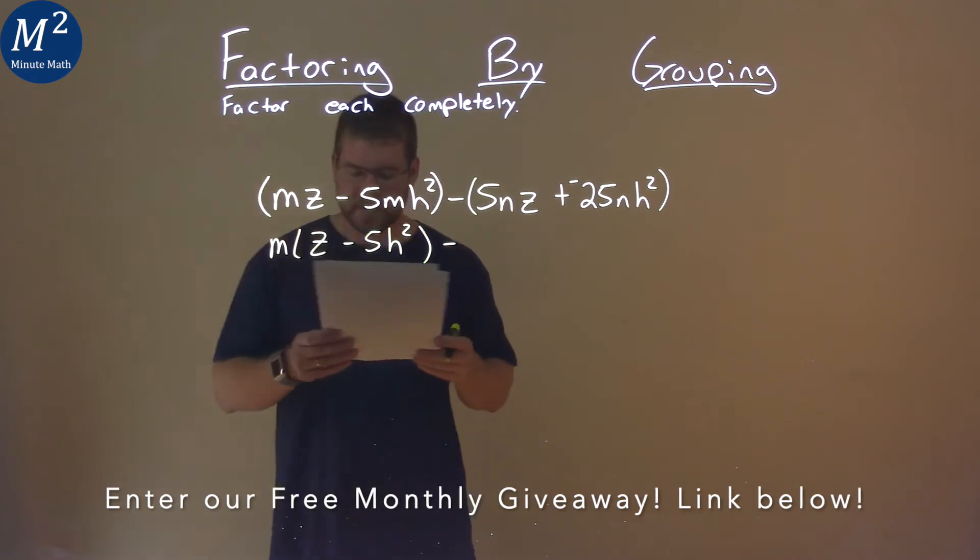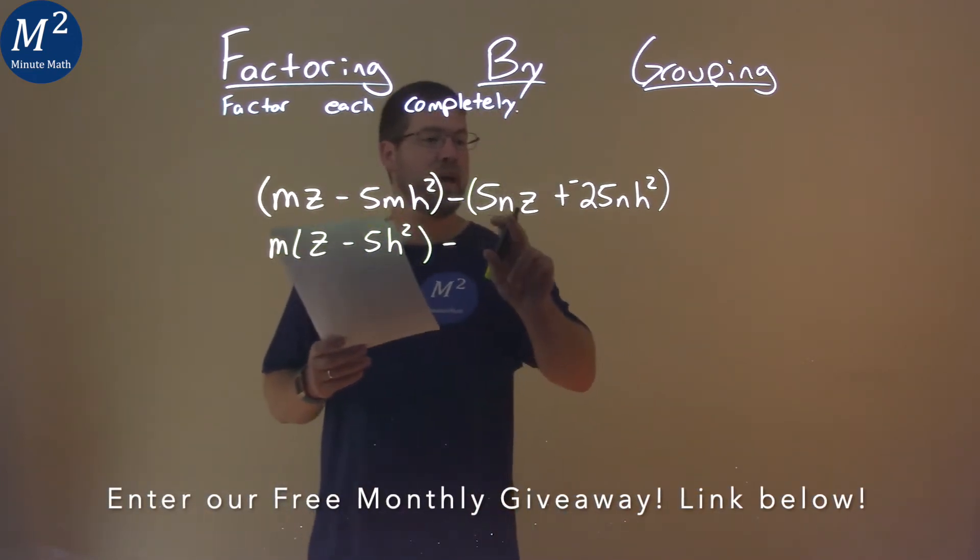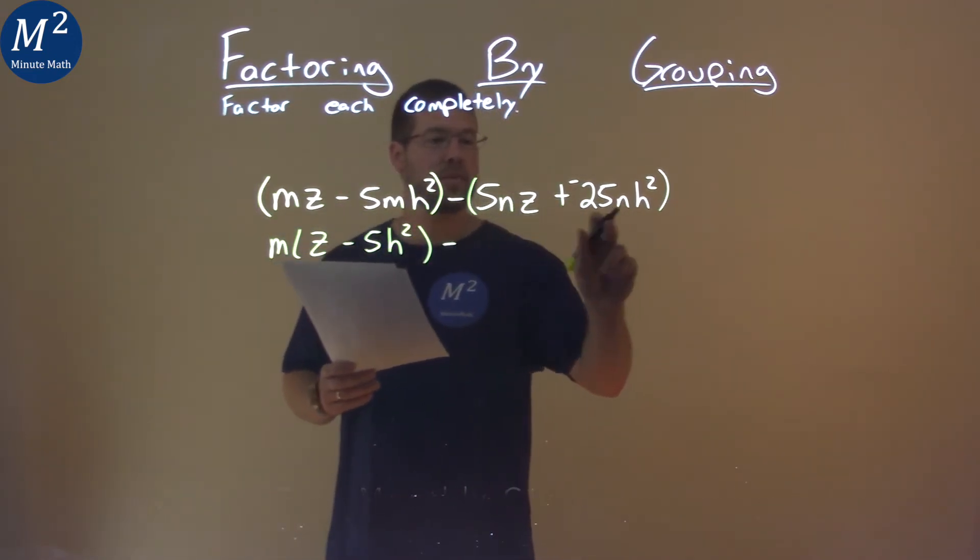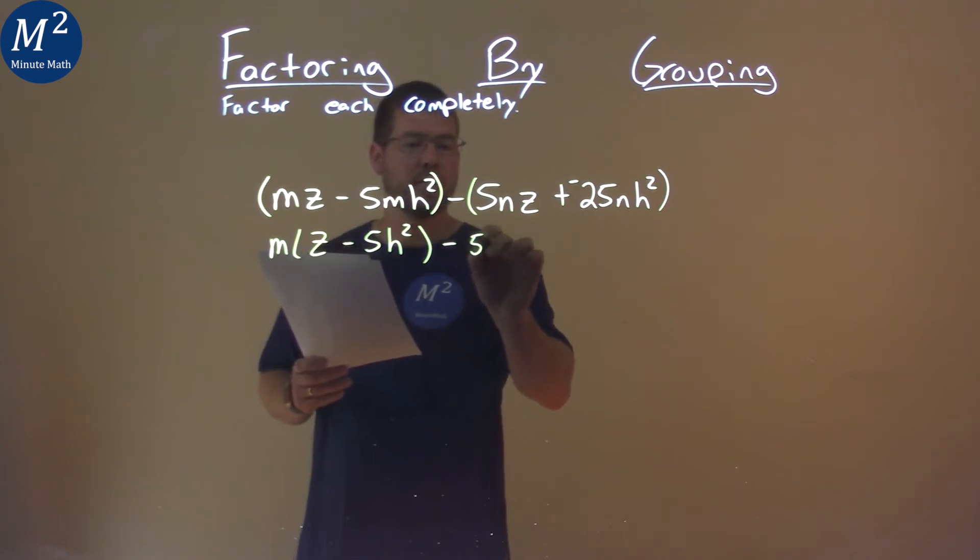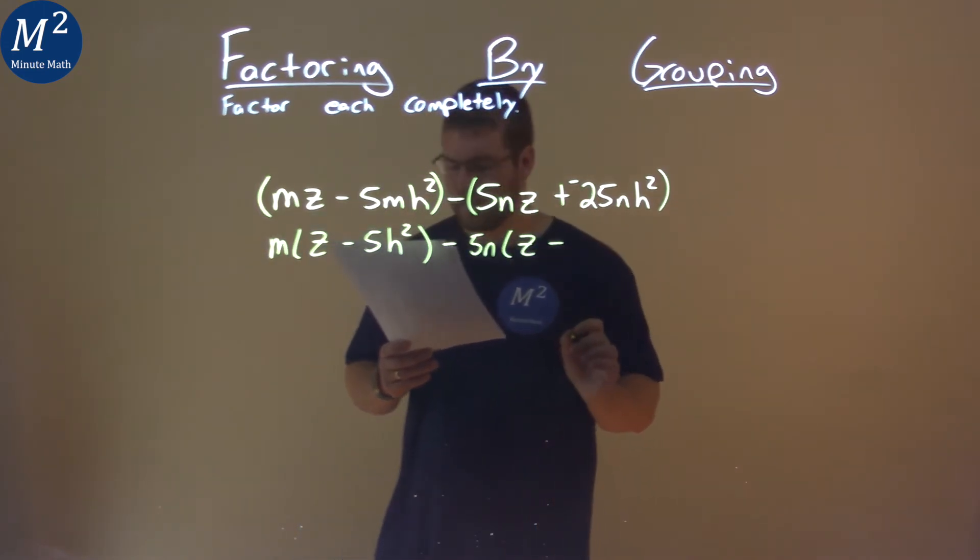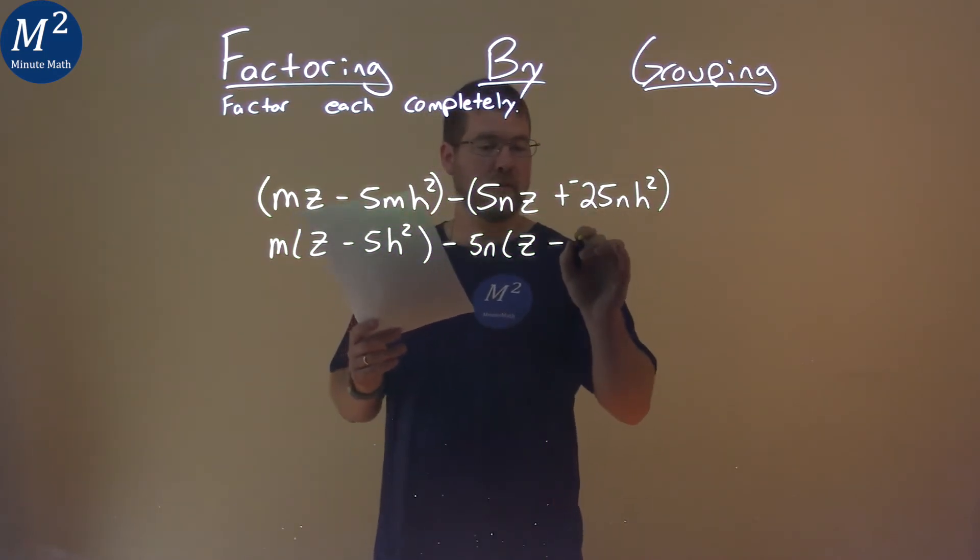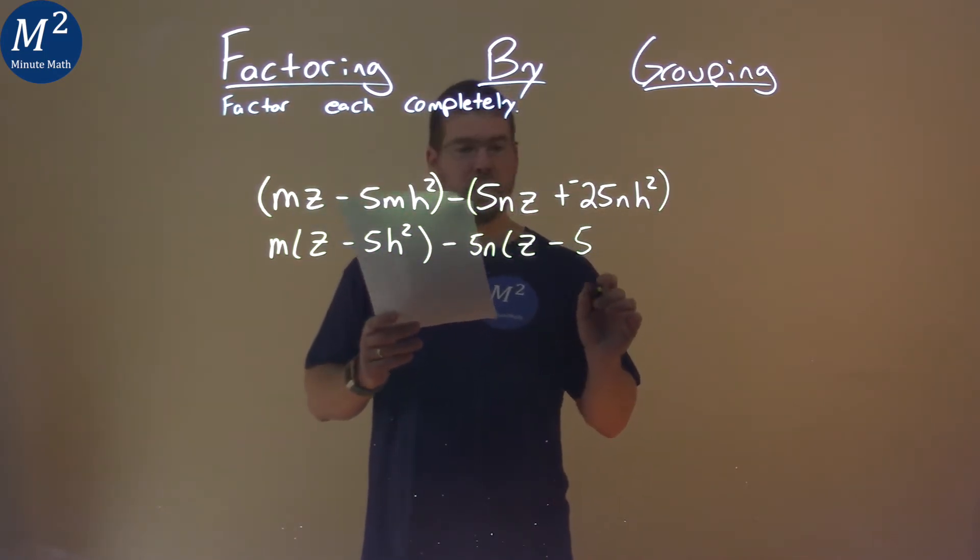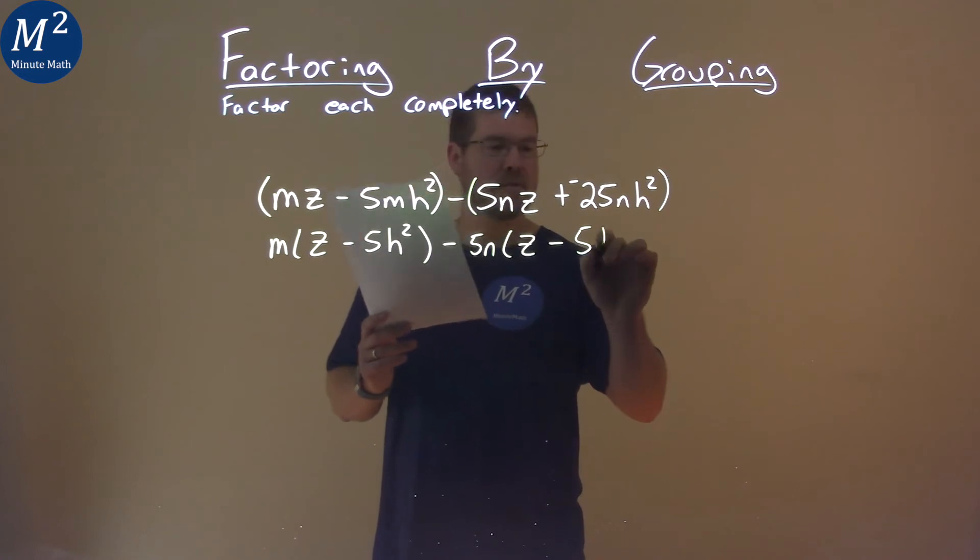The second part here, what do we see that we can pull out? Well, 5n goes into both parts. So, I pull out a 5n. What am I left with? Well, just a z here minus, well, 25 divided by 5 is 5, and we pull out the n, so we're left with just the h squared.